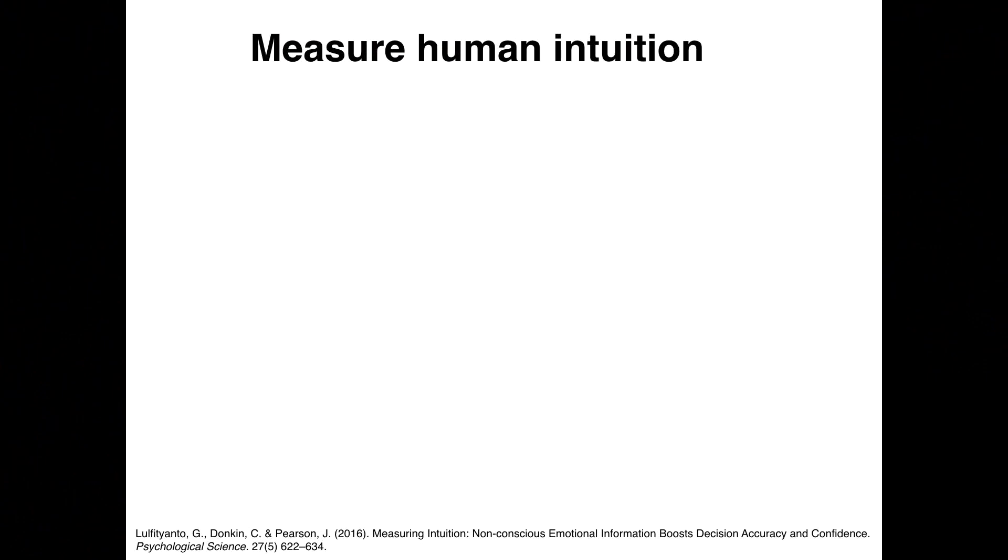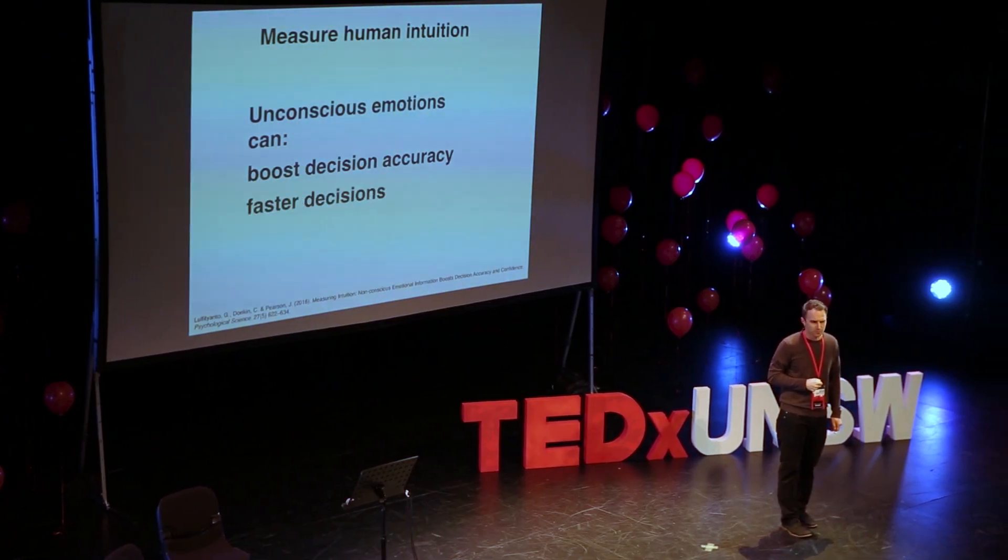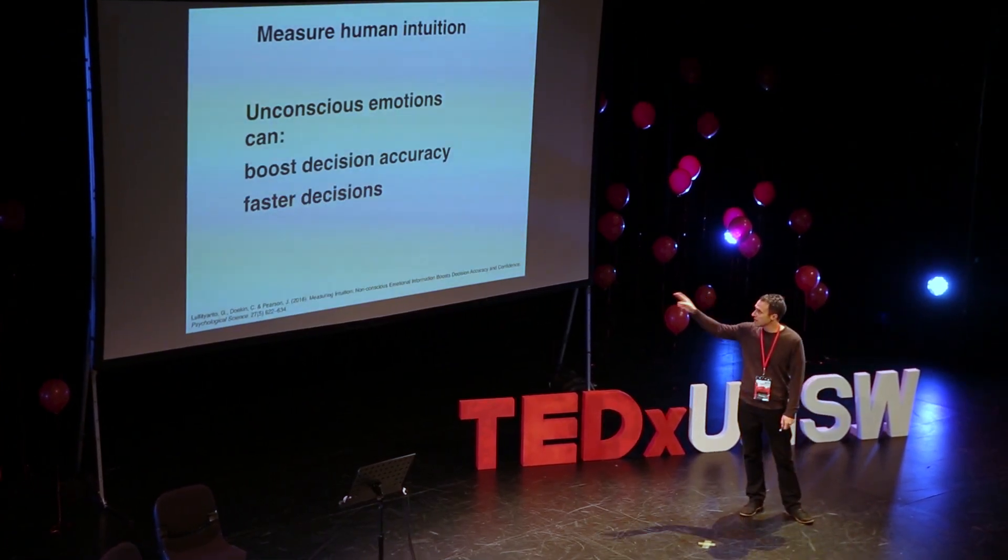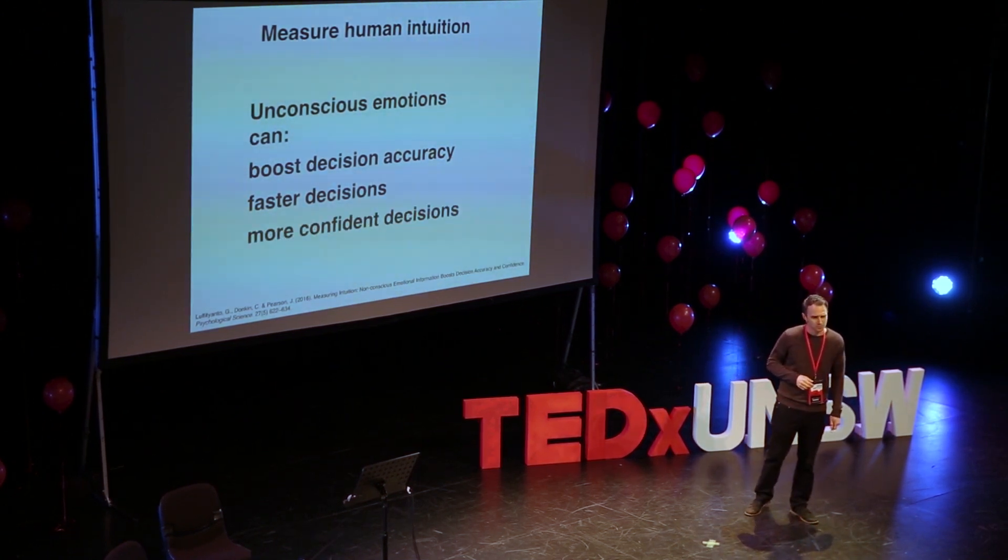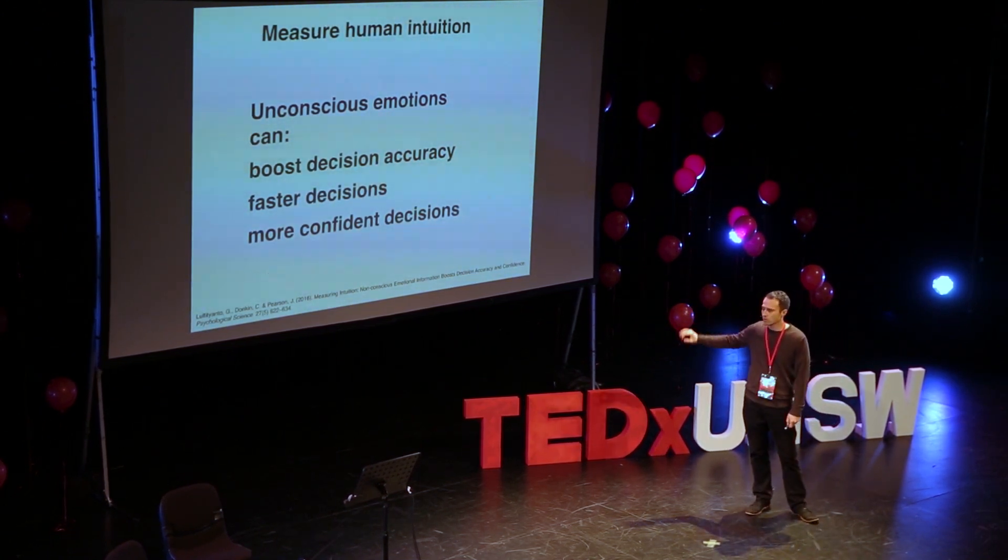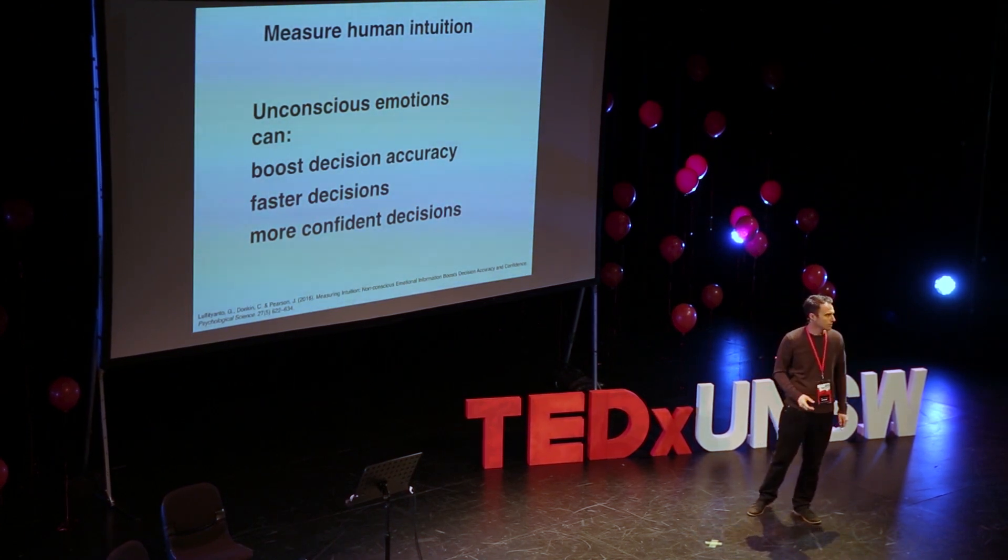And we have done that. And we have shown that these unconscious emotions can boost the decision accuracy. You can make better decisions when you can use this extra emotional unconscious information. It can also speed up your reactions, make you faster at making these accurate decisions. And even make you more confident. So, you make these fast accurate decisions and you feel more confident about them.